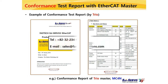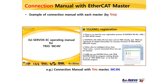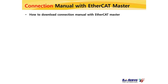If you need these compatibility test reports, please contact Fastech Customer Center by phone or at sales@fastech-motions.com and we will send you the report. Next, let's look at the connection manual example. This is the connection manual for MC4N, the EtherCAT master of Trio, and Fastech EtherCAT slave. The connection manual contains the ESI file registration method and master-slave connection method.